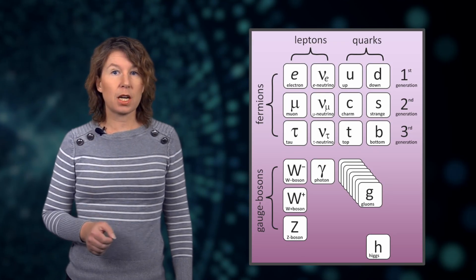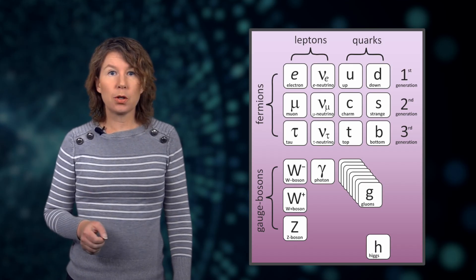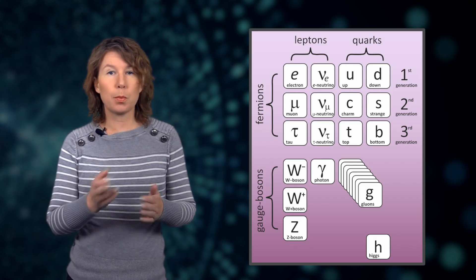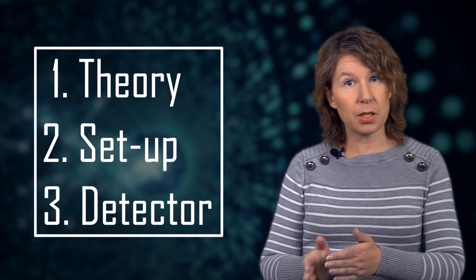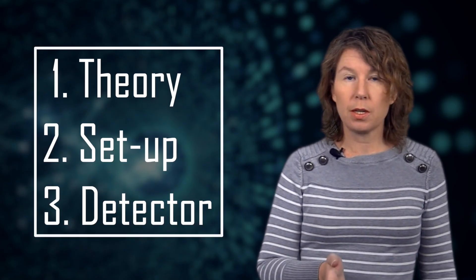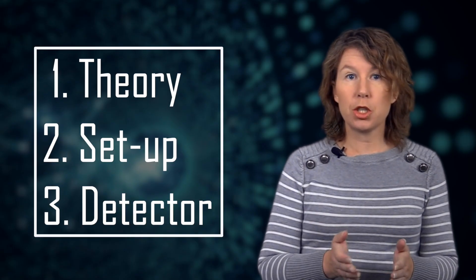How can this happen? Particle physicists calculate what they expect to see in an experiment using the best theory they have at the time — currently that's the standard model of particle physics. But the theory alone doesn't tell you what to expect in a measurement. For this, you also have to take into account how the experiment is set up, for example what beam and what luminosity, and how the detector works and how sensitive it is. This together — theory, setup, detector — gives you an expectation for your measurement. What you are then looking for are deviations from that expectation.